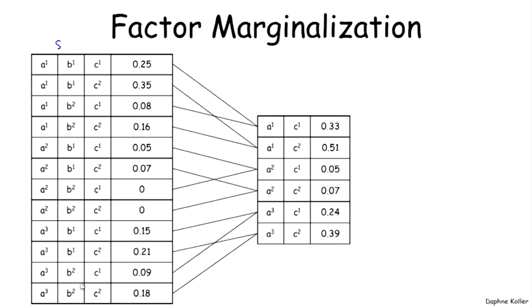So for example, if we have a factor here whose scope is A, B and C. And we want to marginalize out B to get a factor whose scope is A, C. What we're going to be doing is, again, taking both possible values of B. In this case, because B is binary, there's only two values. And we add them up in order to get the entry for A1, C1. So 0.25 plus 0.08. And all the other rows in this table are computed in exactly the same way from the corresponding rows in the original larger factor.